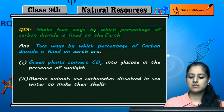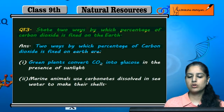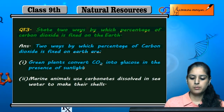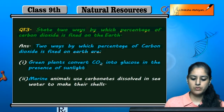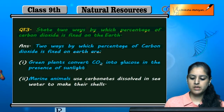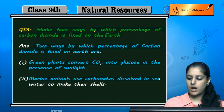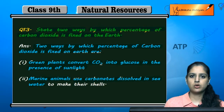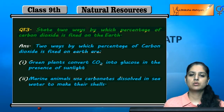Sab se pahle green plants hain - woh carbon dioxide ko glucose mein badal dete hain sunlight ki presence se. Aur jo marine animals hain, woh carbonates jo seawater mein dissolve hain, unko apni shells banane ke liye use karte hain.